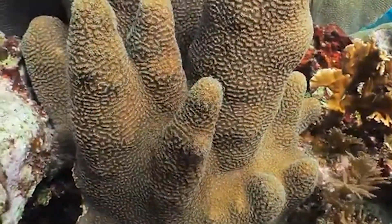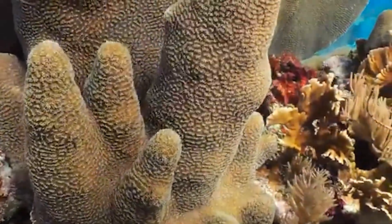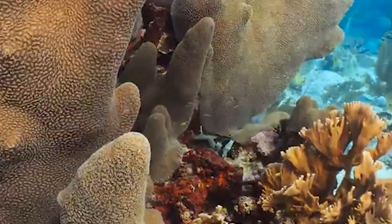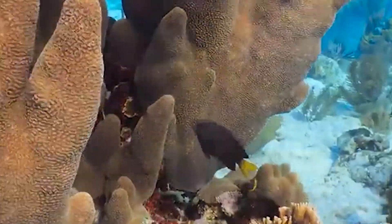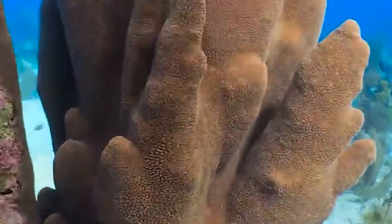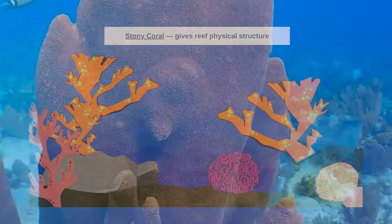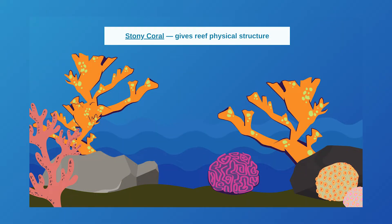These animals live in colonies that form large stony coral structures. As living animals, they provide structure and a food source. And once the polyps die, their hard skeletons still contribute to the reef by adding complex structure and habitat for other plants and animals. There are over 3,000 species of stony corals, coming in all sorts of shapes and structures. The more complex 3D space a reef has, the more life it will attract.